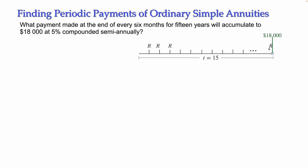There will be another type of problem related to a present value where you need to compute payments — we'll solve that next. For now, let's solve this first problem. We know the future value is $18,000. The nominal rate of interest is 5%, and it compounds two times per year, so M equals 2. Because the payments are also two times per year, this is an ordinary simple annuity and I'm going to use the ordinary simple annuity formula.